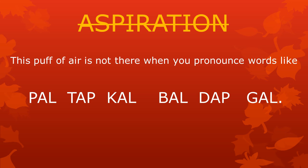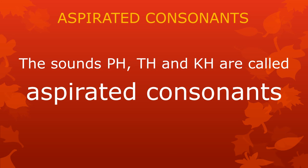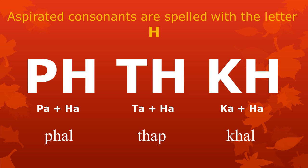This puff of air is not there when you pronounce words like pal, tap, and gal, or bal, dab, and gal. The sounds ph, th, and kh are called aspirated consonants. The aspirated consonants ph, th, and kh are spelled with the letter ha. The sound ph as in phal is spelled with the letters p and ha. The sound th as in tap is spelled with t and ha. And the sound kh as in khal is spelled with k and ha.